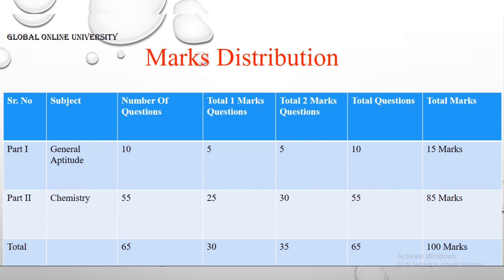The remaining 85 marks will be Part 2, which is the Chemistry paper. There will be a total of 55 questions: 25 questions for one mark and 30 questions for two marks. Total questions will be 55 and the marks distribution will be 85. So 85 plus 15 equals 100 marks total question paper.